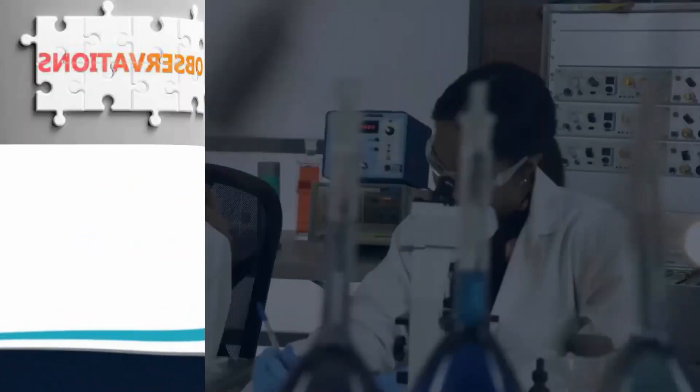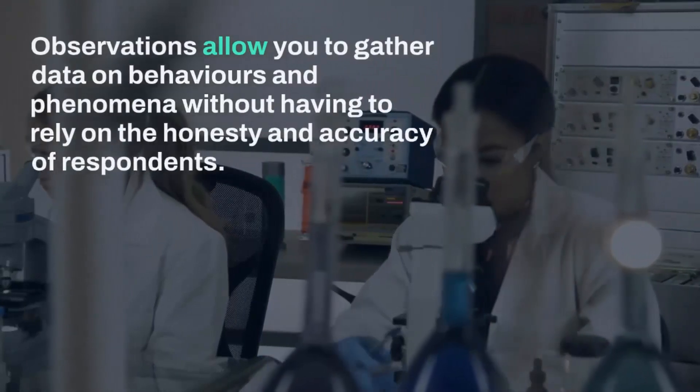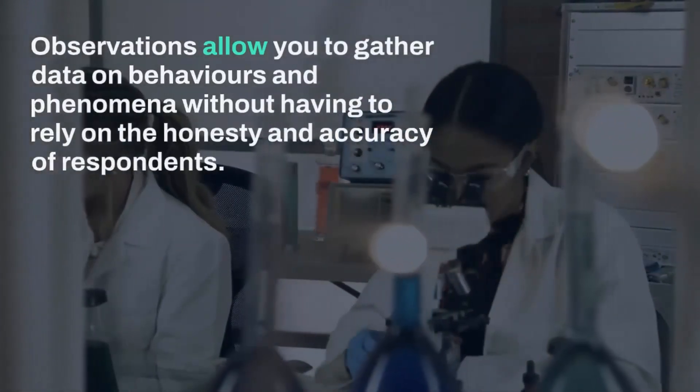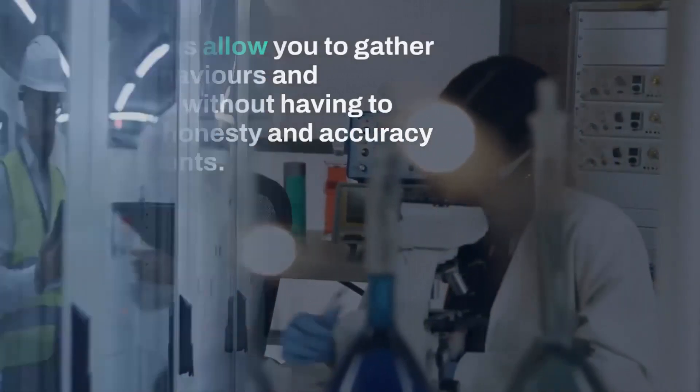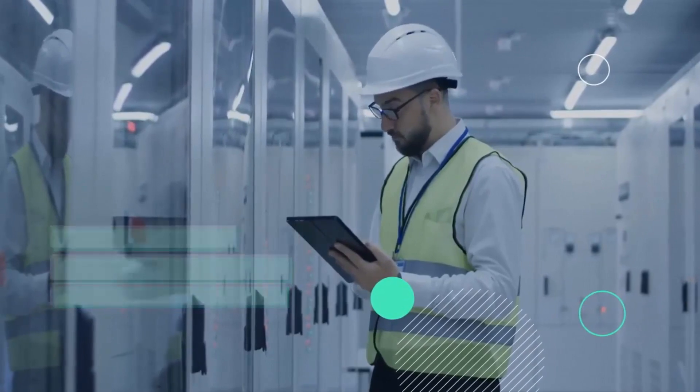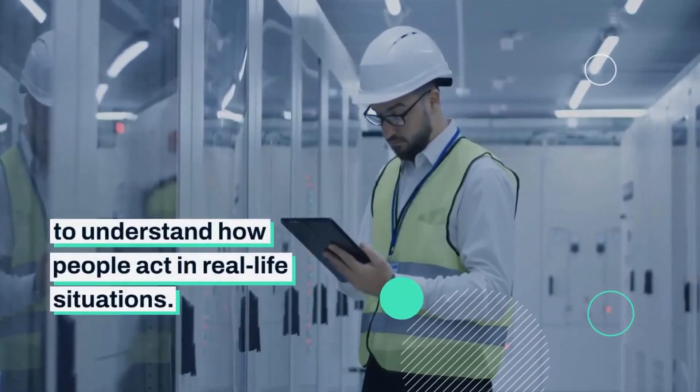2. Observations. Observations allow you to gather data on behaviors and phenomena without having to rely on the honesty and accuracy of respondents. This method is often used by psychological, social and market researchers to understand how people act in real-life situations.